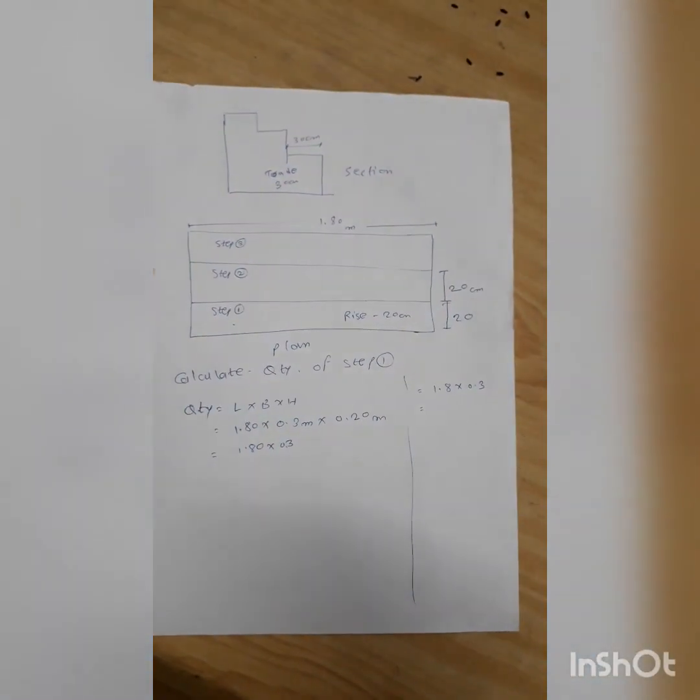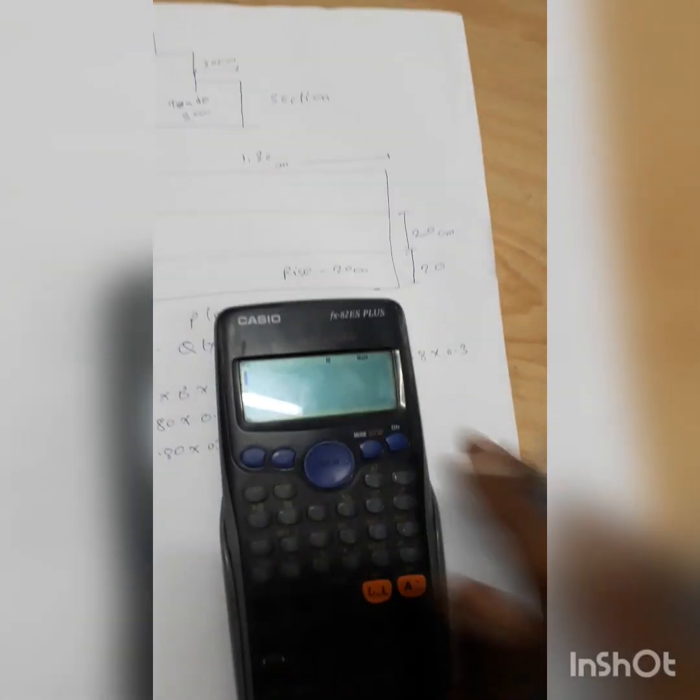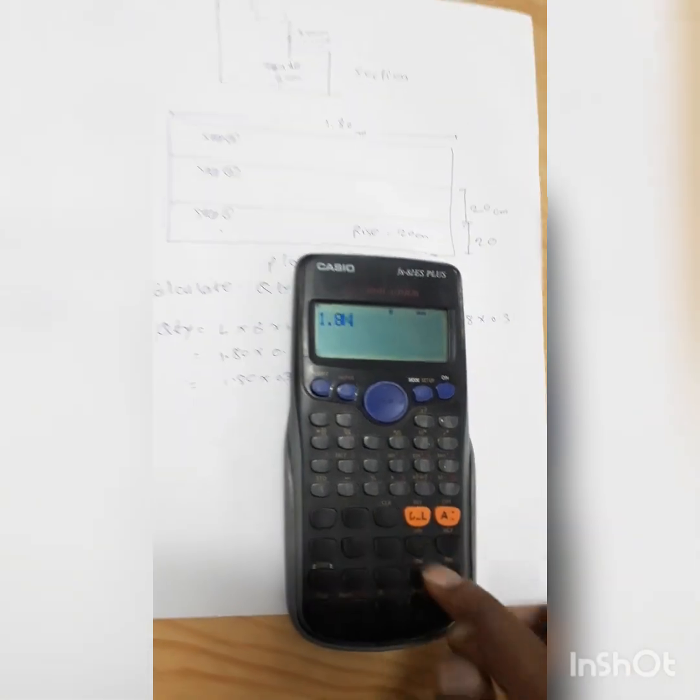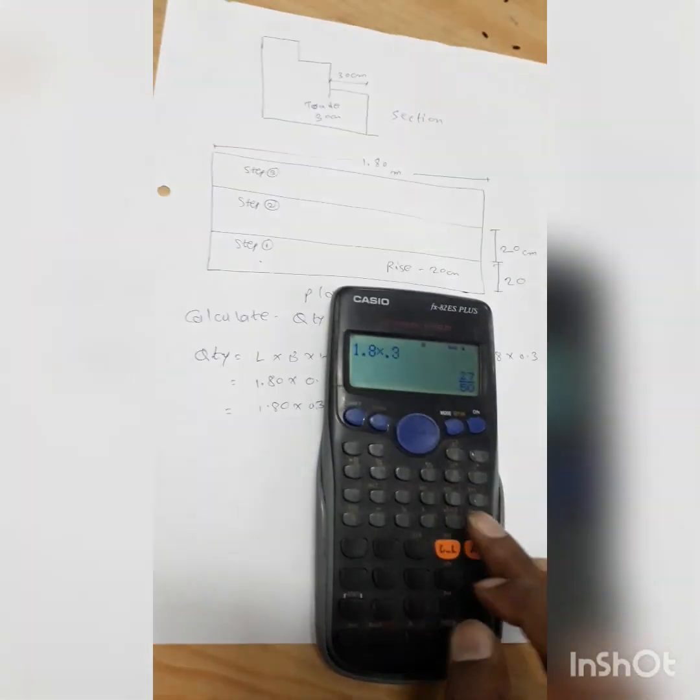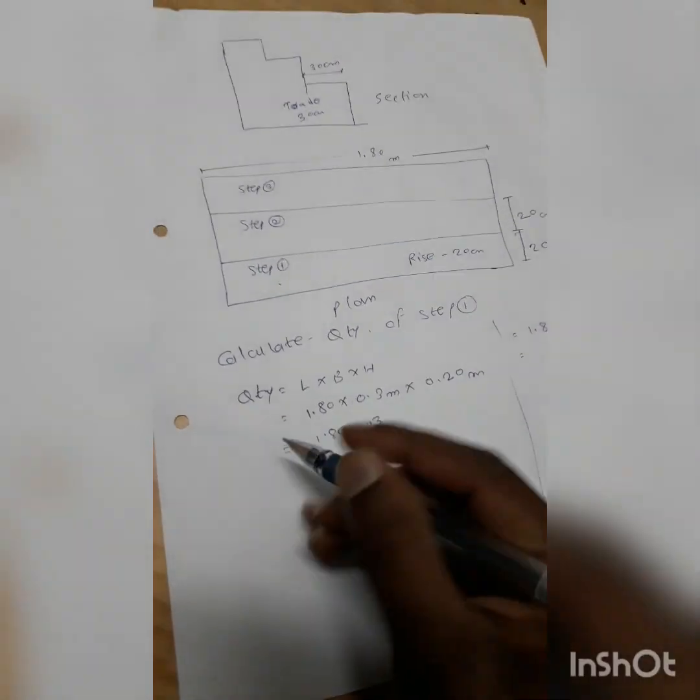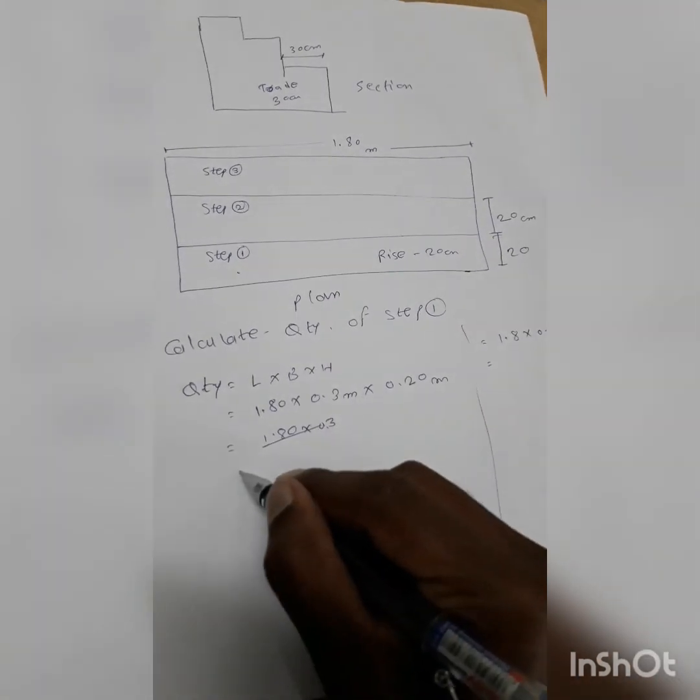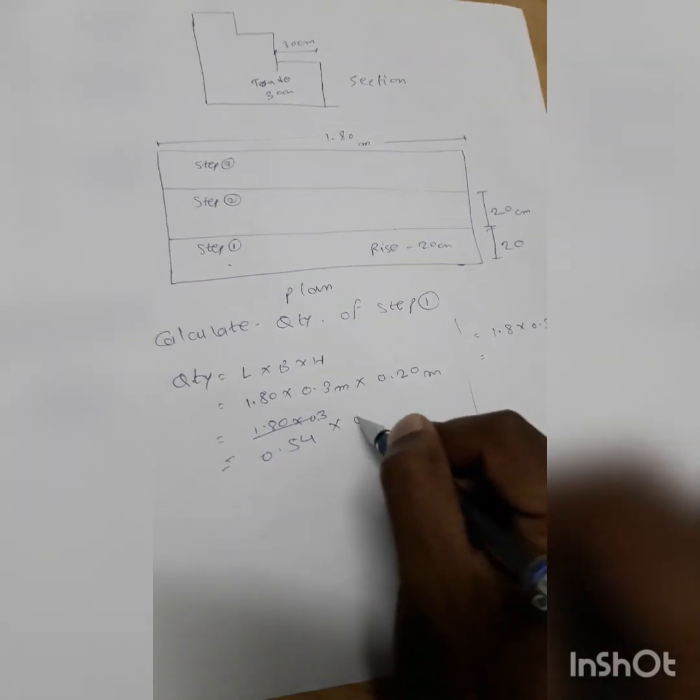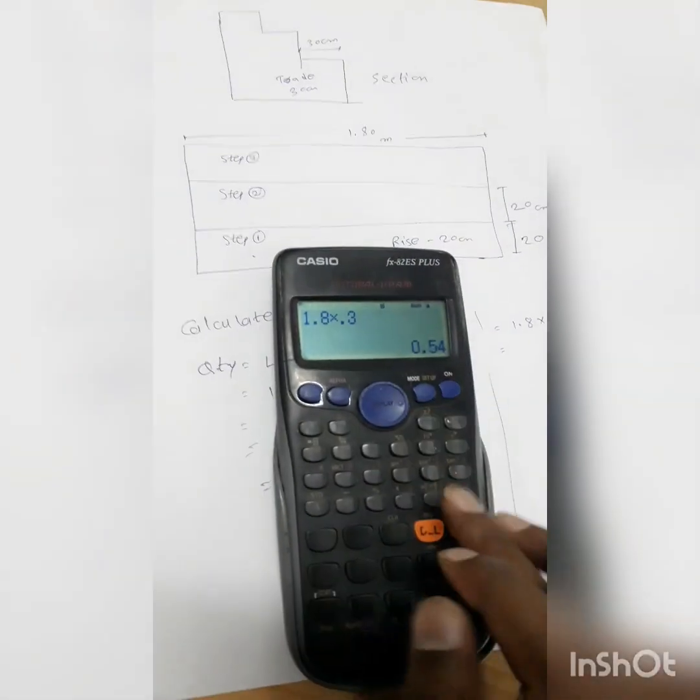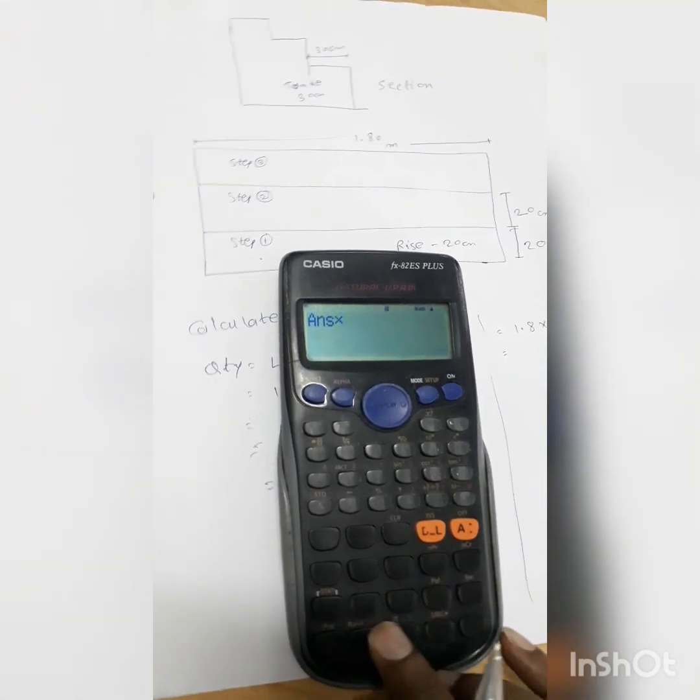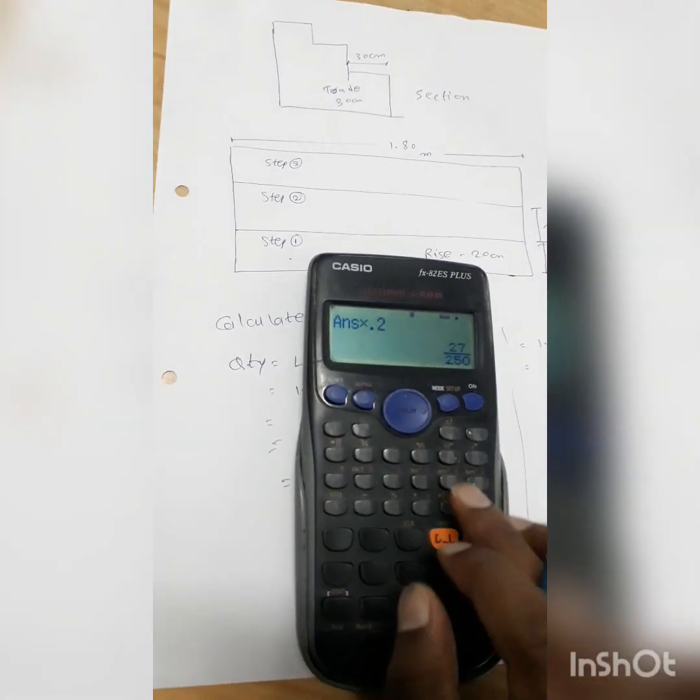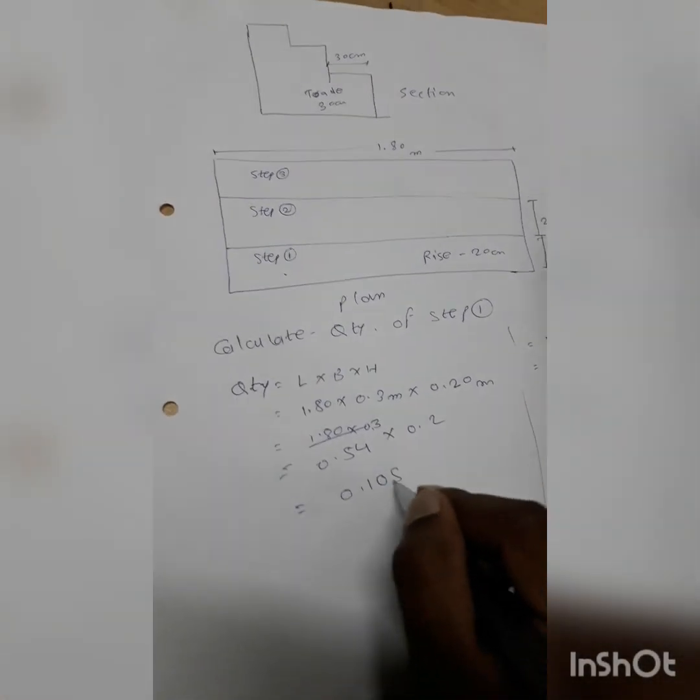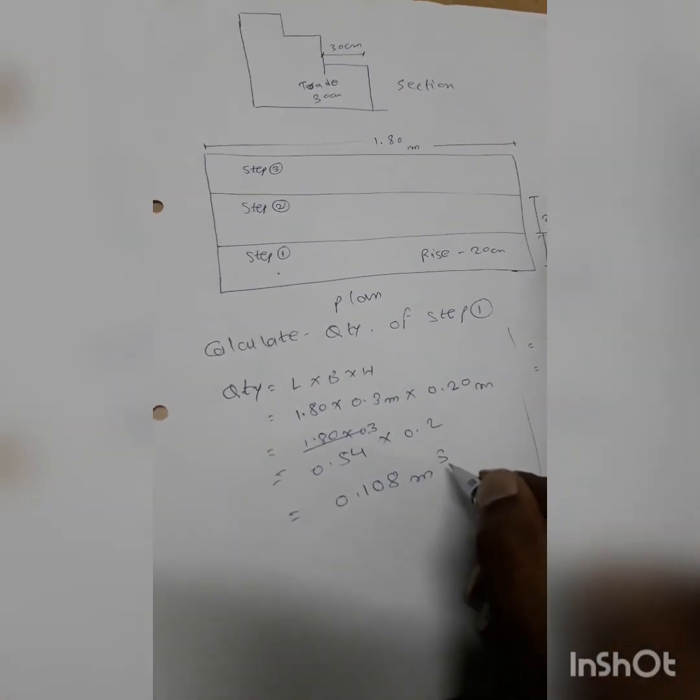We will do the calculations: 1.8 into 0.3 is equal to 0.54, and 0.54 into 0.2 is equal to 0.108 meter cube.